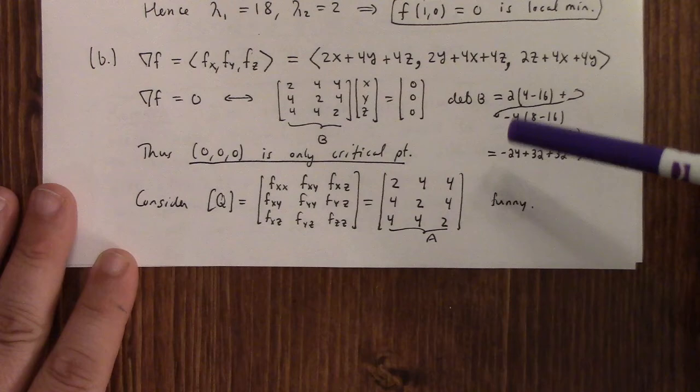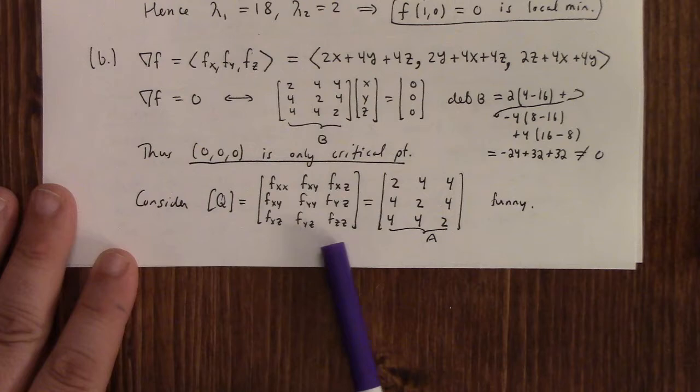Because you can multiply by the inverse matrix and get x, y, z equal to zero. So zero is the only critical point and the matrix of second derivatives is that, and then we can calculate its spectrum.